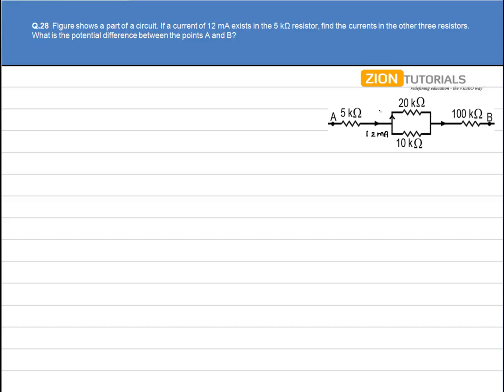Let's say I1 current goes up here. So the remaining current, that is 12-I1, will go through the 10kΩ resistance. And again, both currents will add up over here.